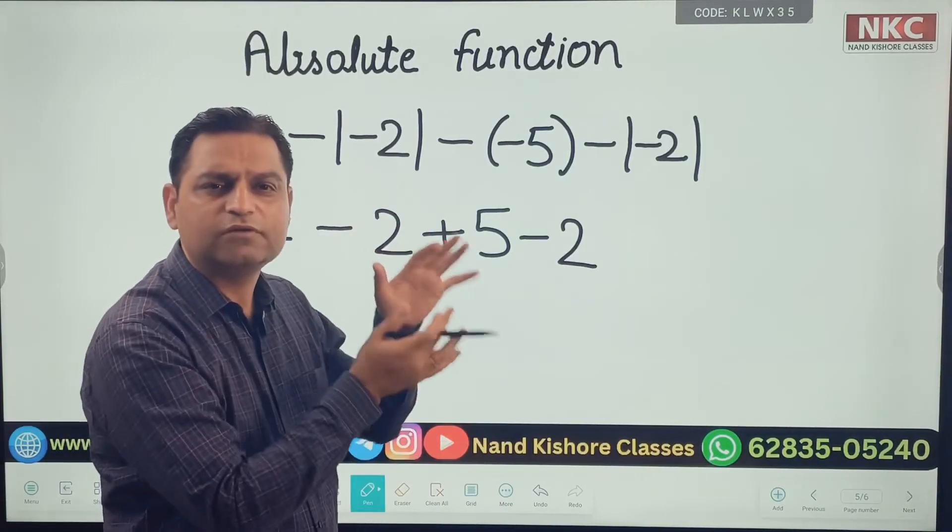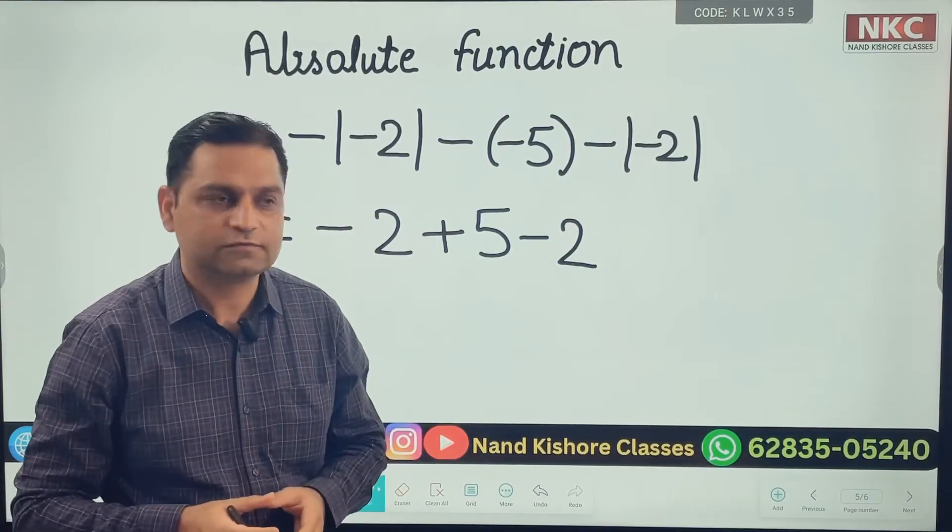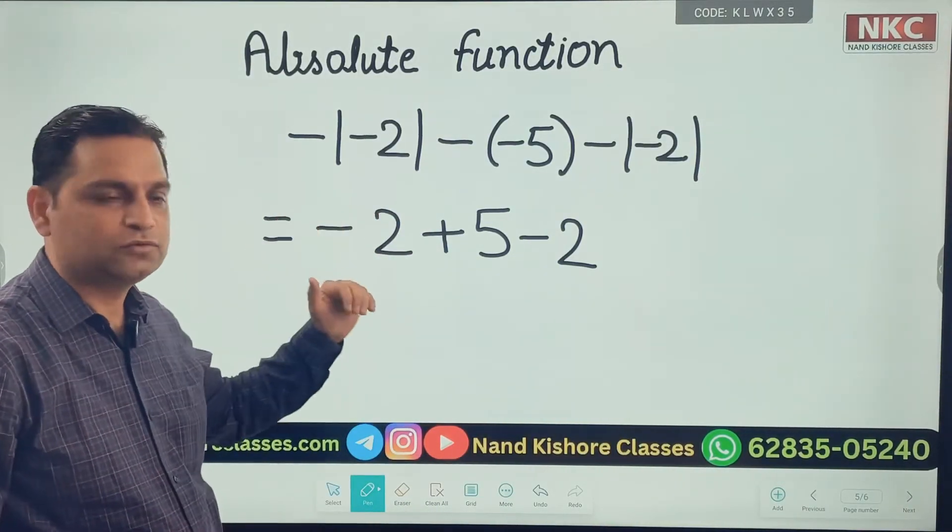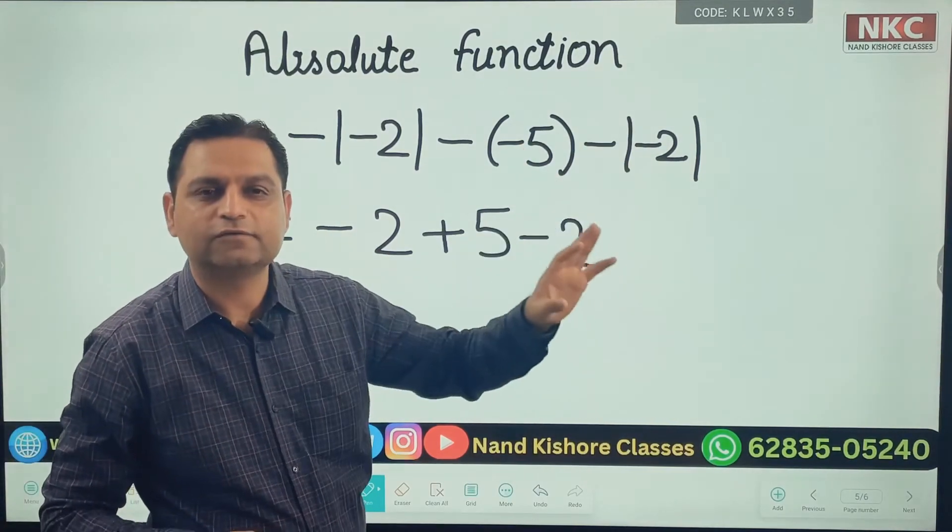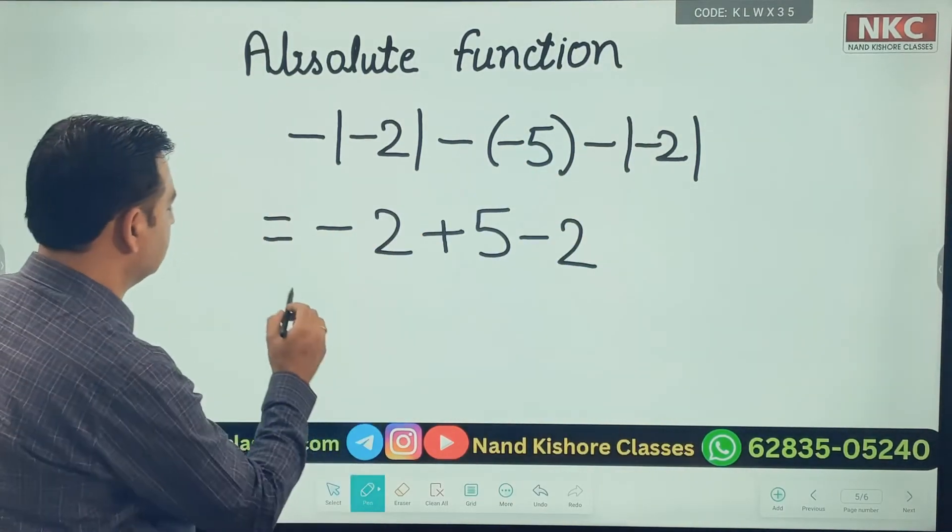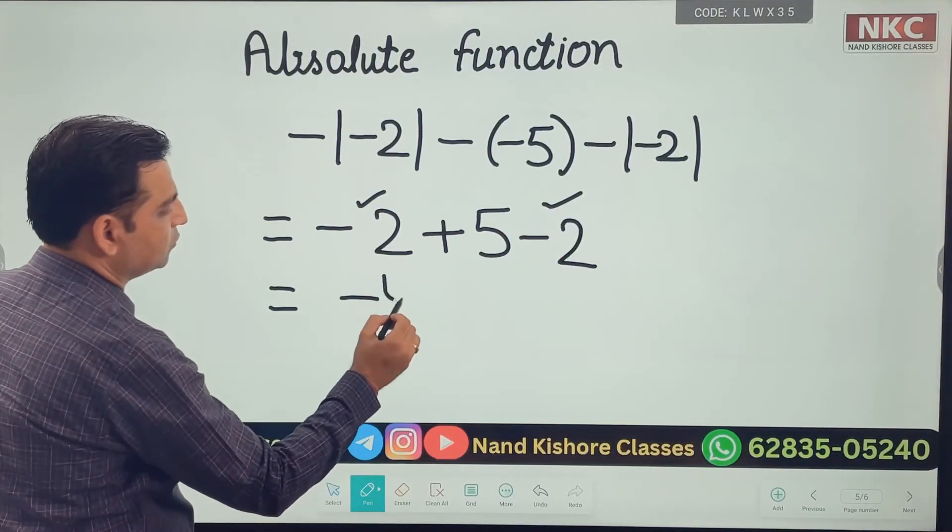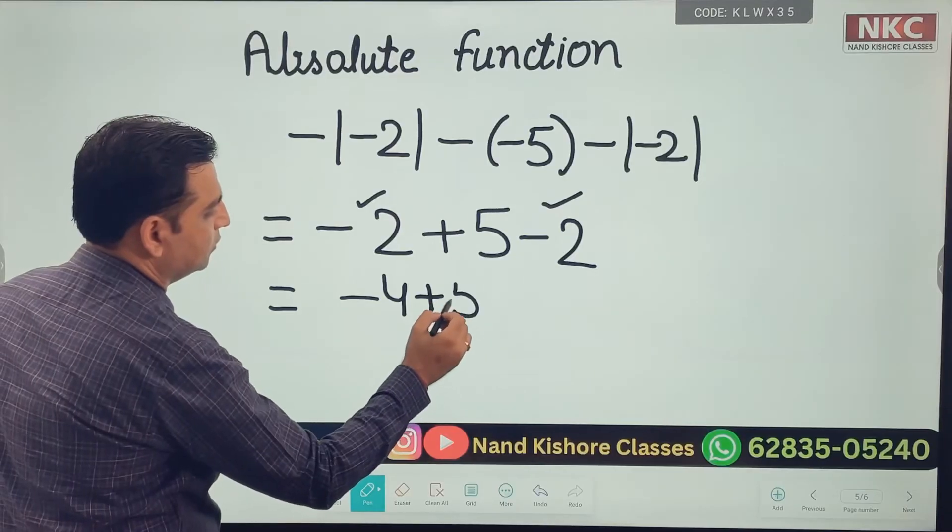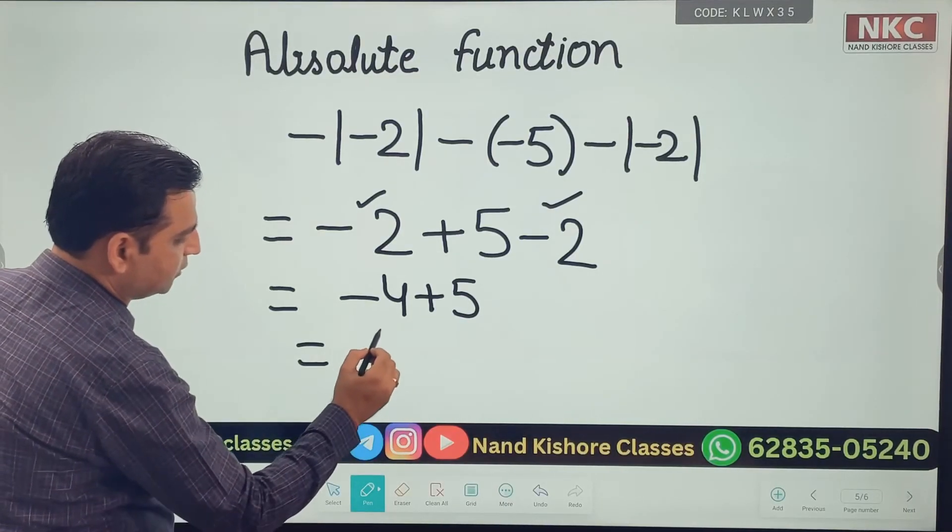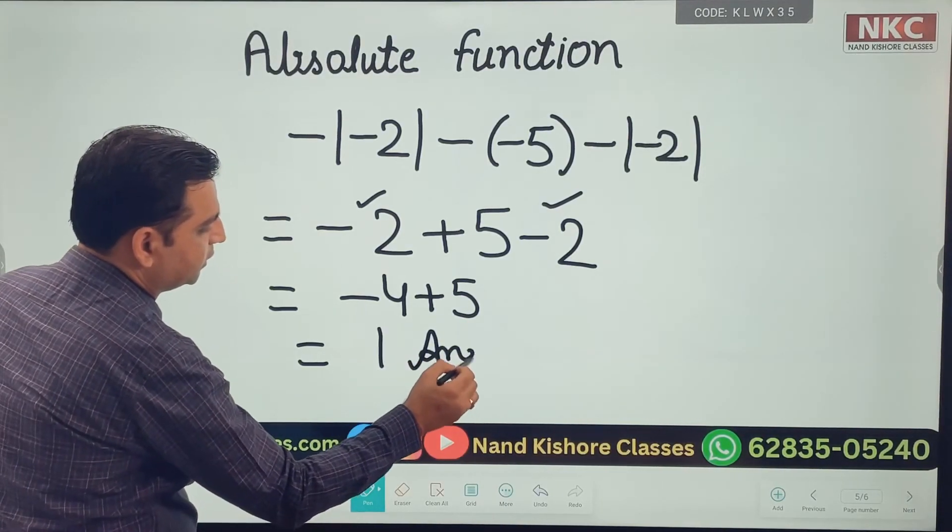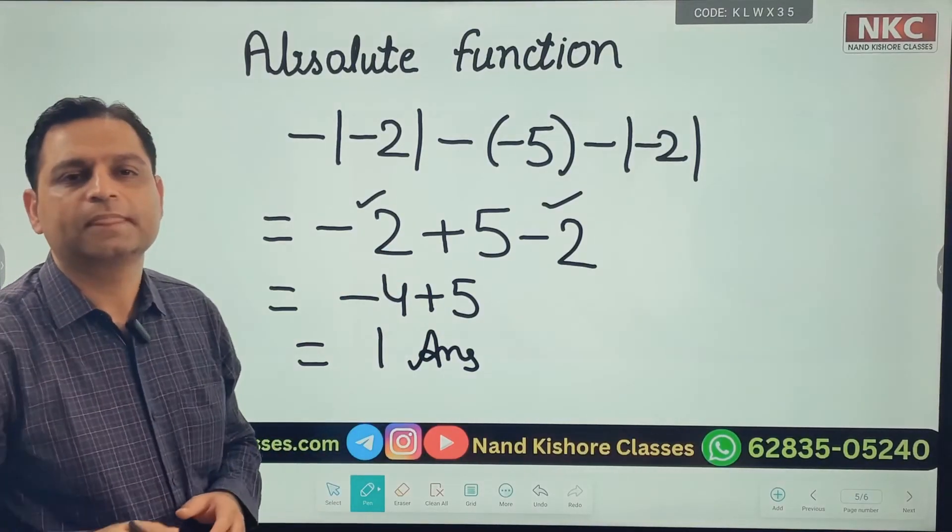And do remember, absolute functions we also call modulus. Like modulus of minus two is two. And now it becomes minus two and minus two. Combining them together makes minus four. And minus four plus five is one. So the final answer for this question is one.